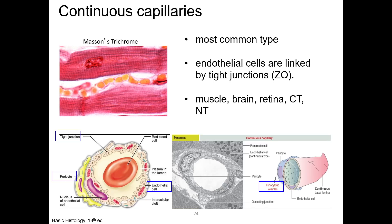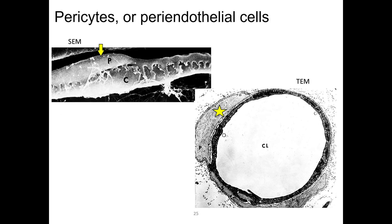These capillaries are essentially closed systems, and thus they transport fluids and solutes in vesicles by transcytosis. Pericytes, or peri-endothelial cells, play critical roles. They're seen here in a scanning electron micrograph and a transmission electron micrograph, and you can appreciate in both their close association with the capillaries.